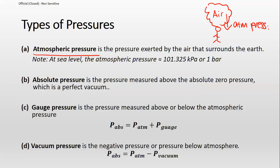The typical value we use, which is at sea level — our common reference — is that the pressure at sea level is 101.325 kilopascal. Another unit for it is bar, which is one bar.